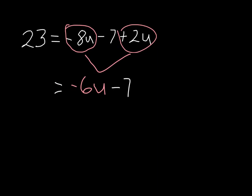So far, I'm not solving the equation yet, I'm just simplifying the right side because I had multiple terms. Now I'm left with 23 equals negative 6u minus 7, which is a two-step equation.